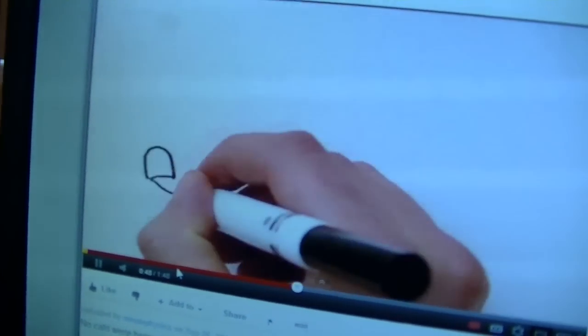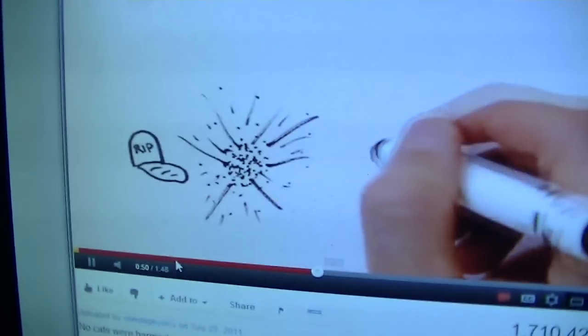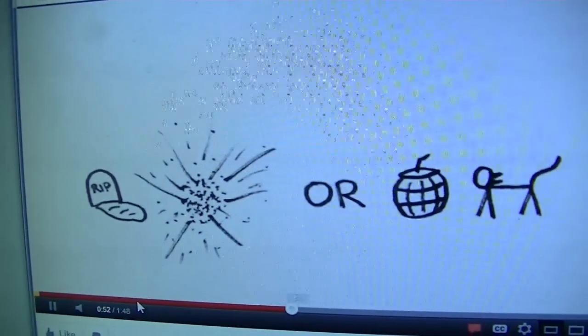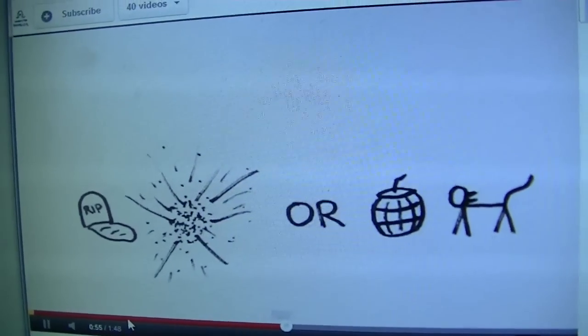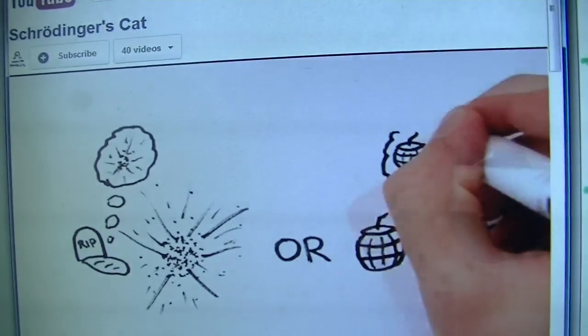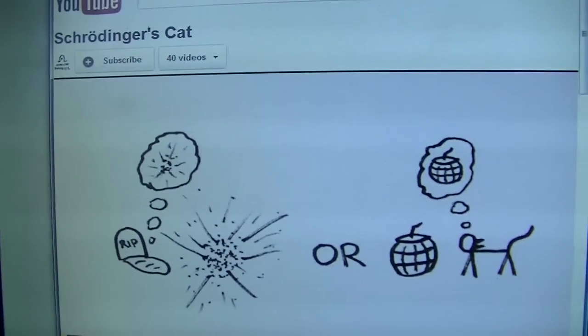But what about the cat's perspective? Well, the cat either sees the gunpowder explode or not. So inside the bunker we actually have these two possibilities. The powder explodes and the cat sees it explode, or the powder doesn't explode and the cat doesn't see it explode.